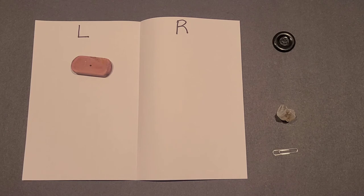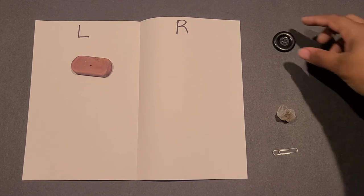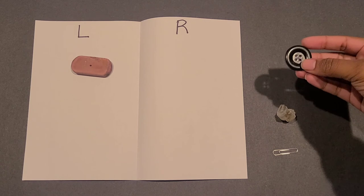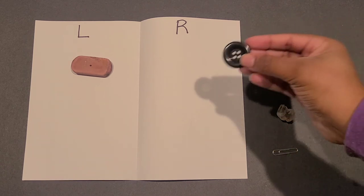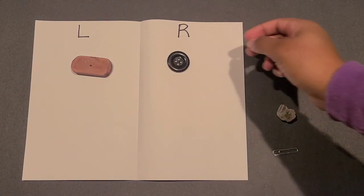Then, you can say, can you put the button on the right side of the paper? And the child can take the button and put it on the right side of the paper.